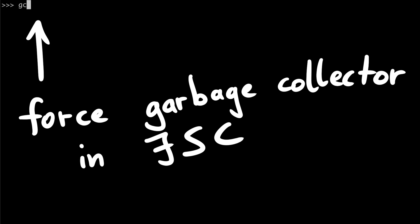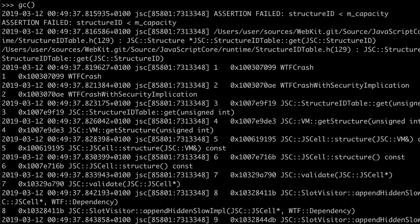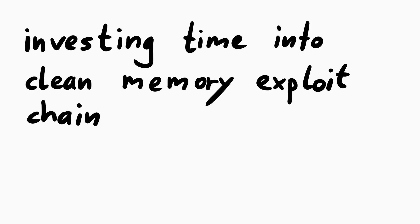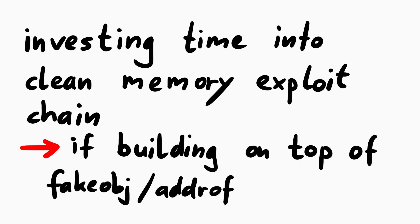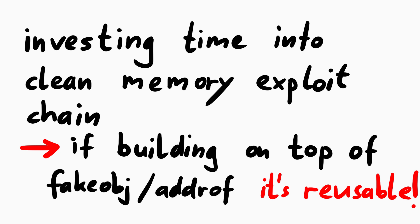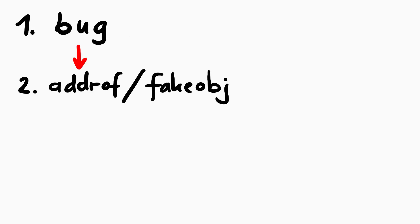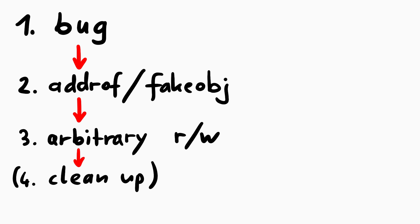Right now our exploit is very unstable — as soon as the garbage collector tries to clean up it will crash, because everything is so messed up. But if you put a lot of time and effort into building a super memory-safe exploit on top of addressOf and fakeObject primitives, this work can be reused for the next exploit. If you find a new vulnerability, all you have to do is create the functions fakeObject and addressOf from your bug, then copy and paste all the other code. You start with addressOf and fakeObject, then create arbitrary read and write, then optionally clean up memory, and then continue your exploit — be it a UXSS or some shellcode.